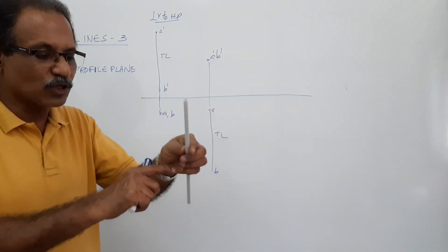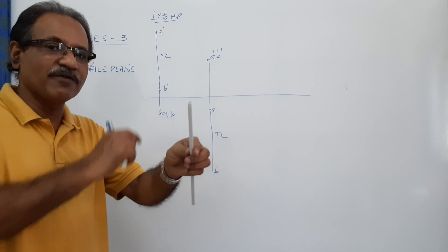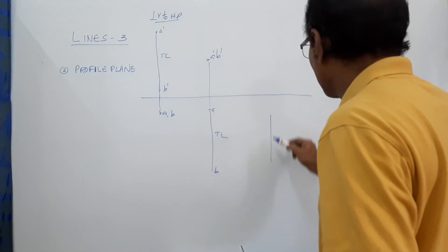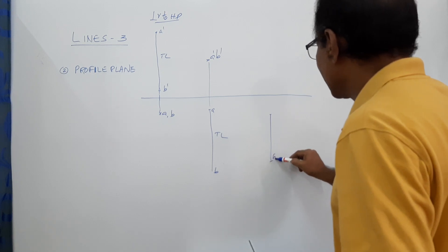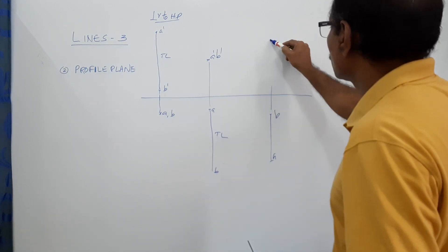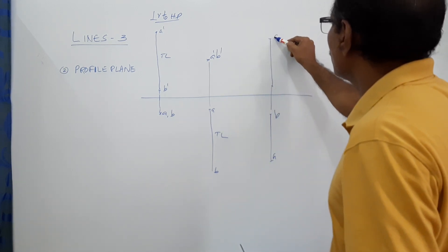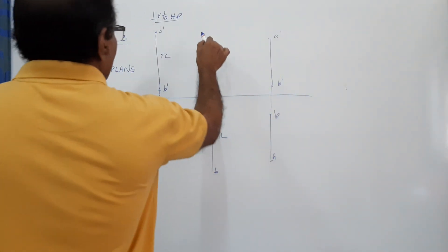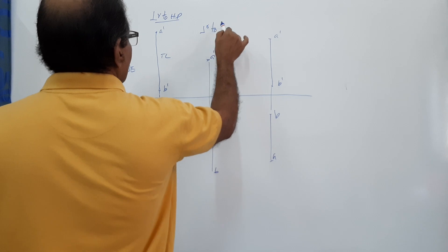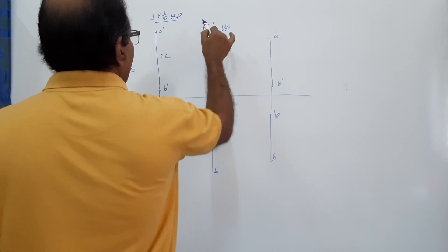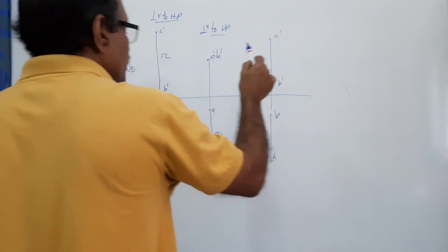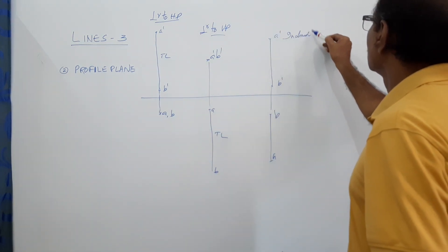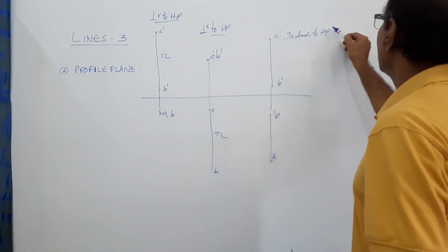Case 3: The line is inclined to both planes in the profile plane — inclined to HP by theta and inclined to VP by phi. The plan is a line AB of shorter length (not true length), and the elevation is also a line a'b' of shorter length. This line in the plan is perpendicular to VP, and in elevation it is inclined to both HP and VP.